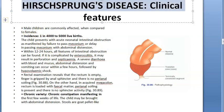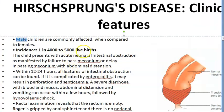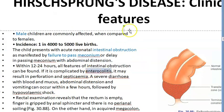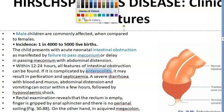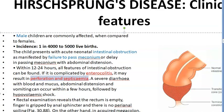Regarding clinical features, male children are more often affected. These patients can be associated with Down syndrome. They present with intestinal obstruction and fail to pass meconium. The condition can be complicated by enterocolitis.